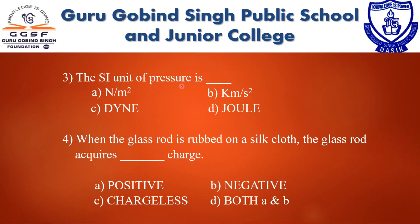Question 3: The SI unit of pressure — we know the formula of pressure equals force divided by area. Force is measured in newton and area in meter square, therefore the unit of pressure is newton per meter square. Question 4: When the glass rod is rubbed on a silk cloth, the glass acquires a dash charge. When we rub a glass rod with a silk cloth, electrons transfer from the glass rod to the silk cloth; as the glass rod loses electrons, it becomes positive. Therefore the answer is positive charge.